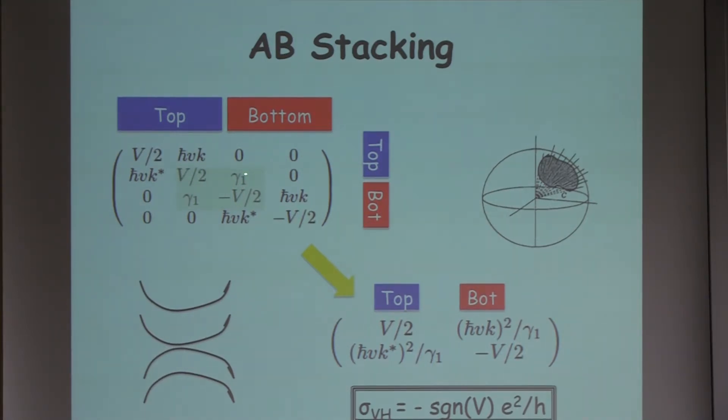This represents a case where the A sublattice on the top layer is on top of the B sublattice on the bottom layer. This interlayer tunneling pushes two of the states away from the Fermi level by a lot. There's two remote bands that don't matter anymore. You end up with an effective two band model for the states near the Fermi level in this AB stacked Bernal bilayer graphene. You can easily see that at zero momentum, at the Brillouin zone corners, if you put a bias voltage you open a gap.